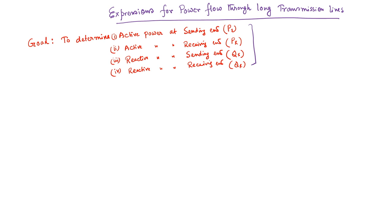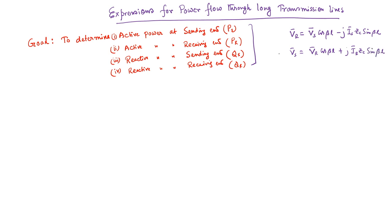We know that VR = VS cos(βl) − j·IS·ZC·sin(βl), and similarly VS = VR·cos(βl) + j·IR·ZC·sin(βl), which were derived in the previous lectures. From these two expressions, we will derive the active and reactive power expressions on both sides.